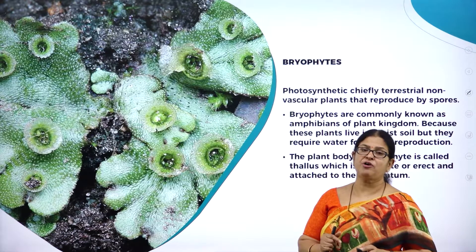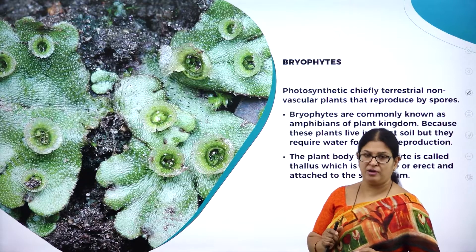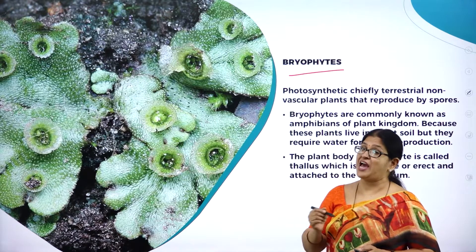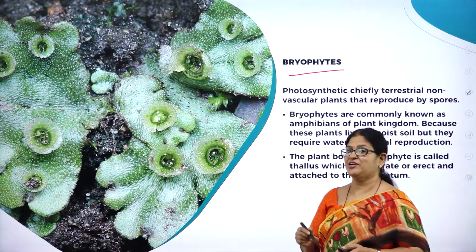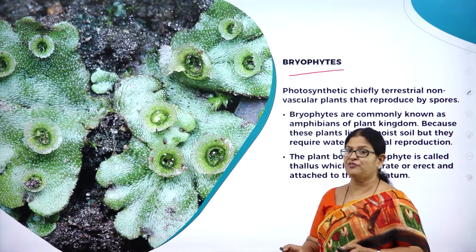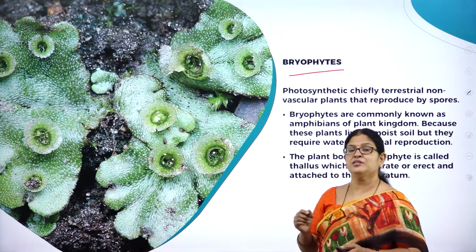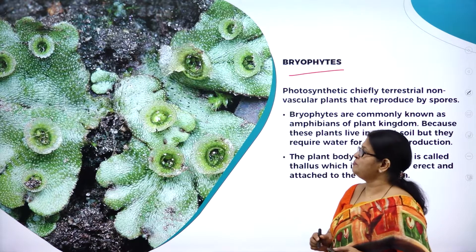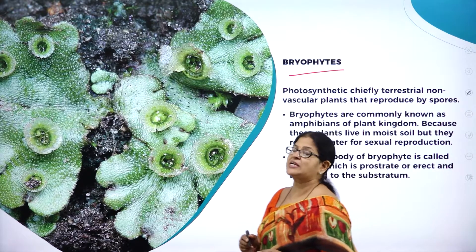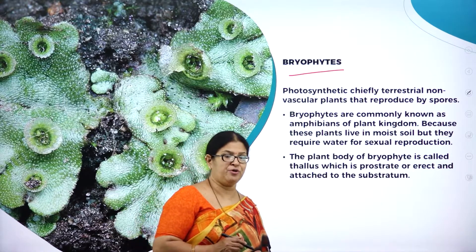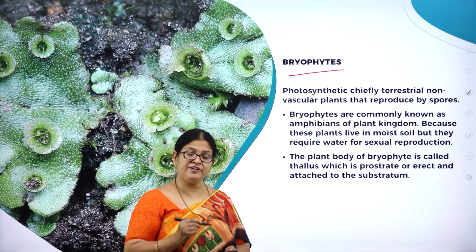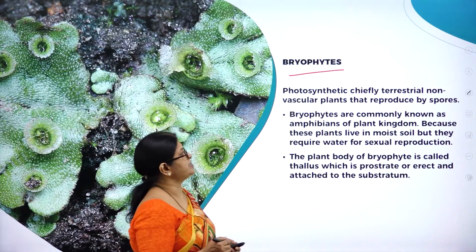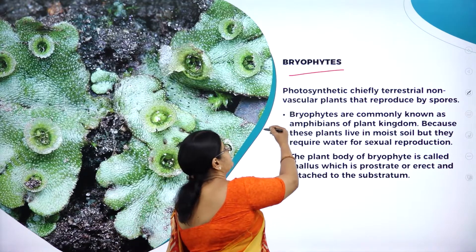Now let us move on to the study of the next group of plants called bryophytes. Bryophytes are referred to as amphibians of the plant kingdom. Just like a frog goes to water for reproducing, even bryophytes need water as a medium for reproduction - hence the name 'amphibians of the plant kingdom'. Now let us study the characteristic features of bryophytes.